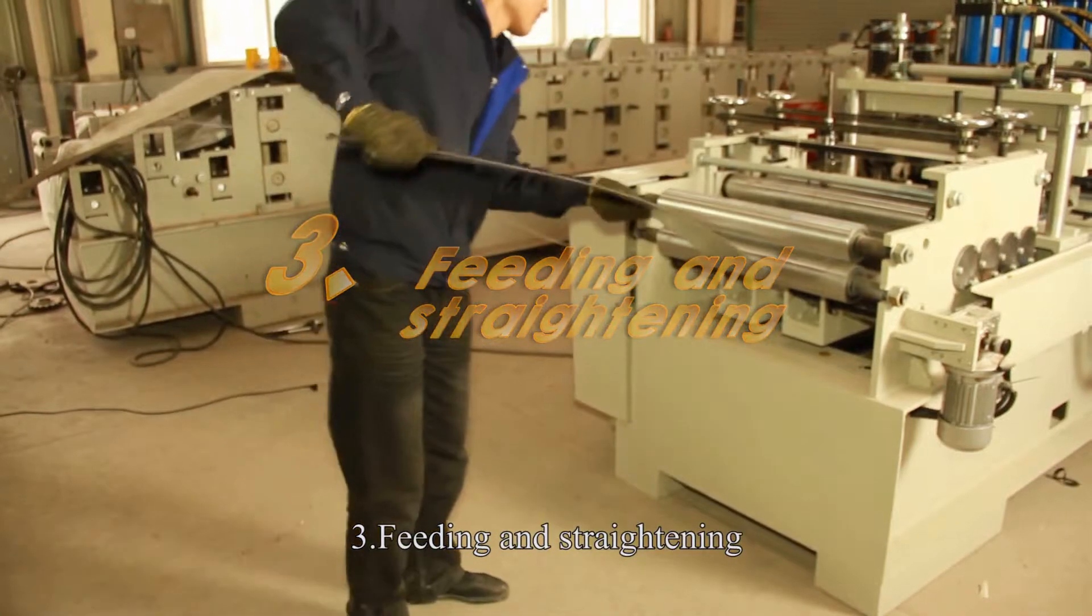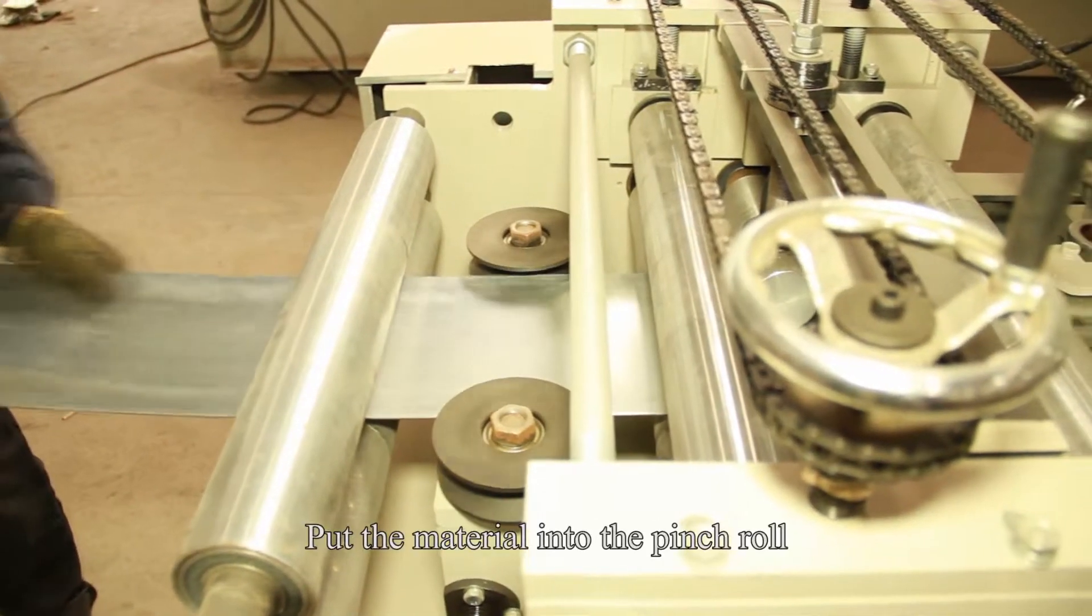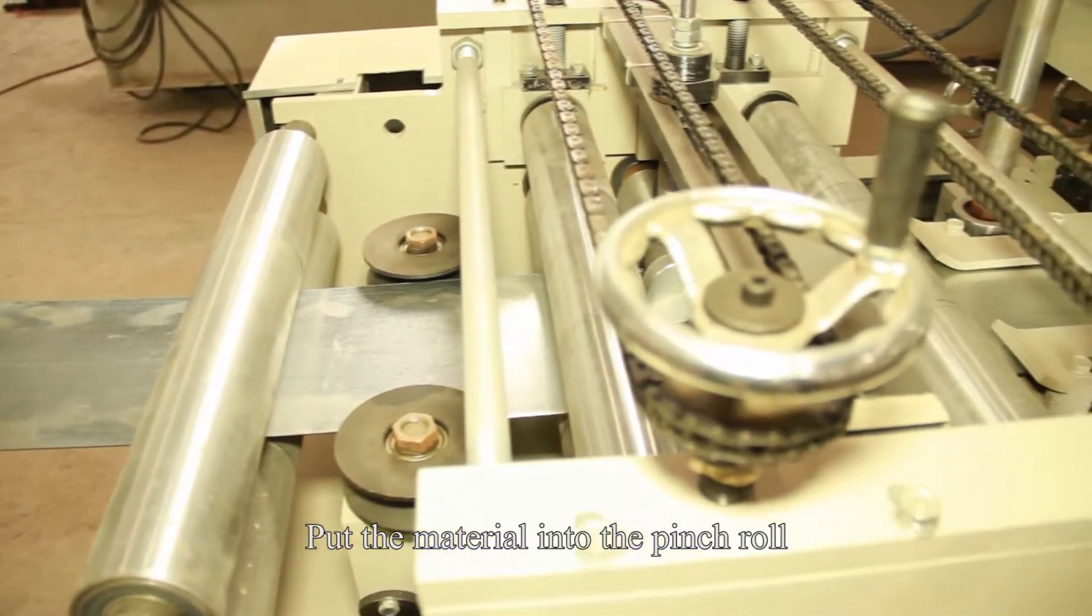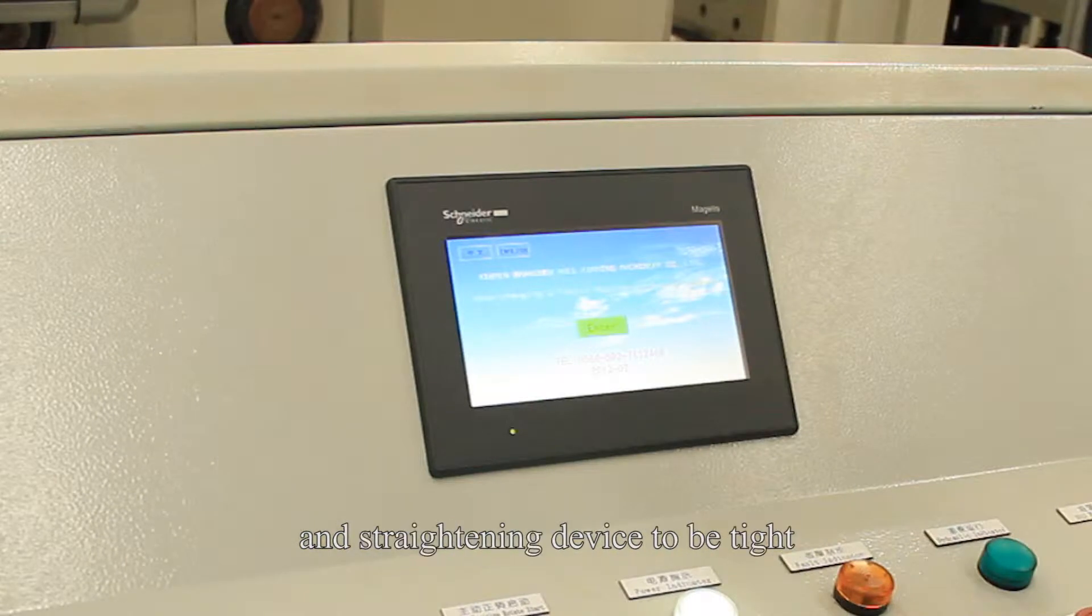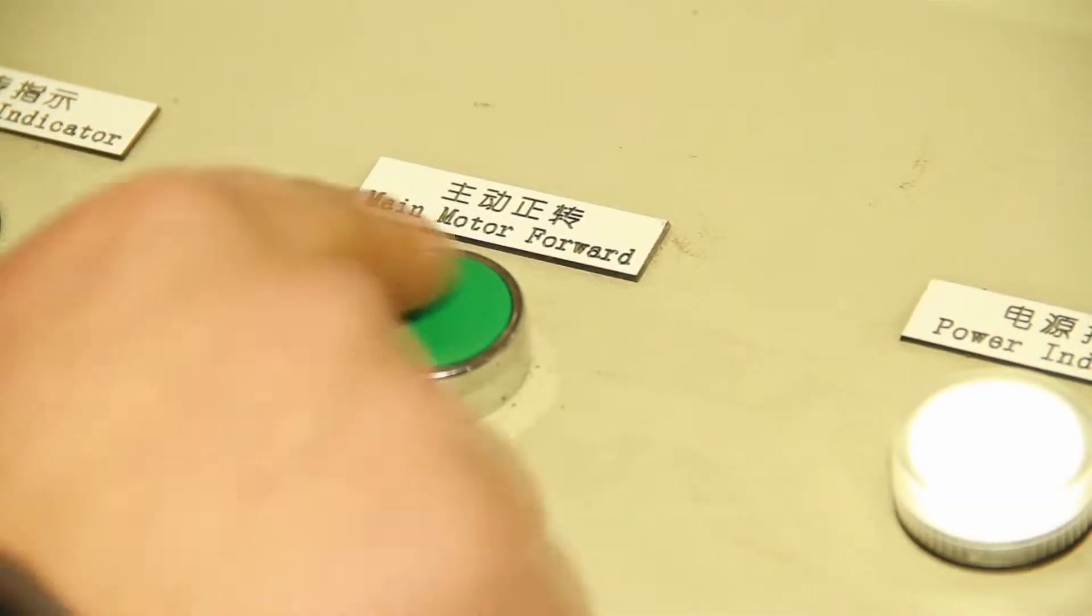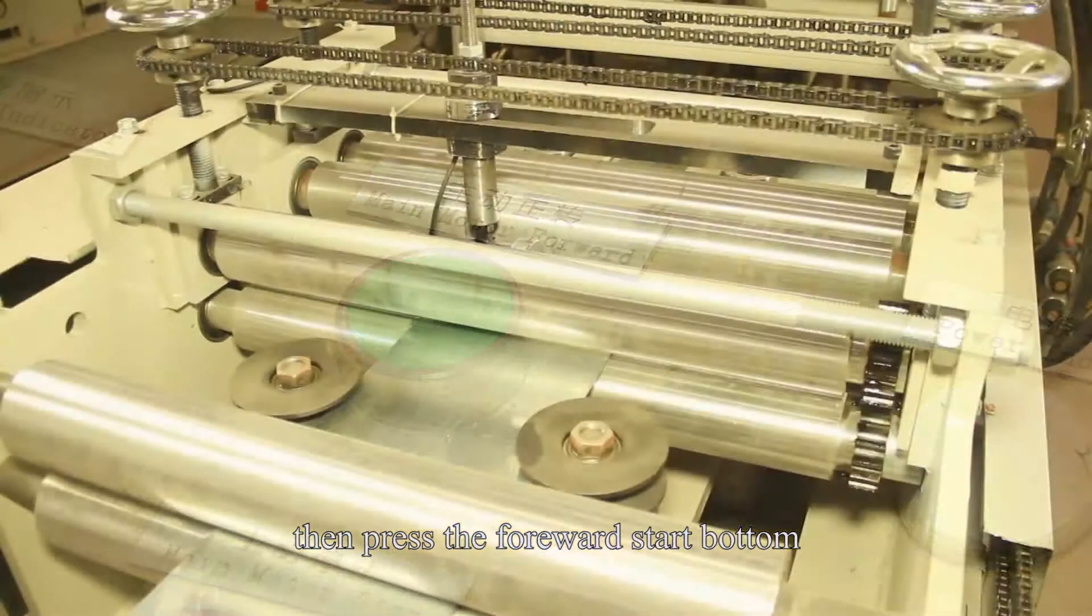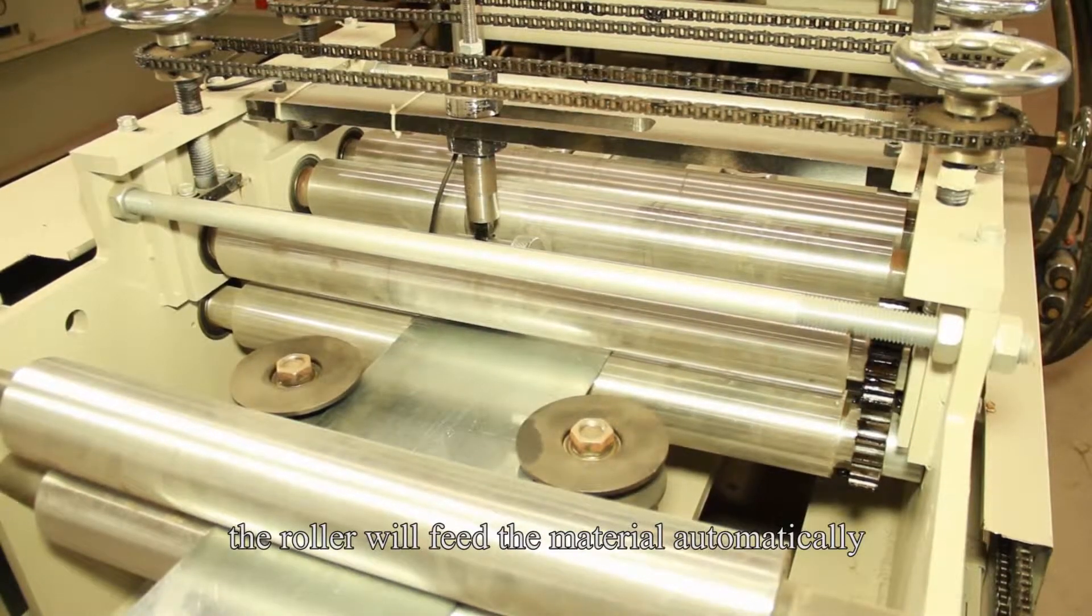Number 3: Feeding and Straightening. Put the material into the pinch roll and turn the hand wheel of the feeding and straightening device to be tight. Then press the Forward Start button. The roller will feed the material automatically.